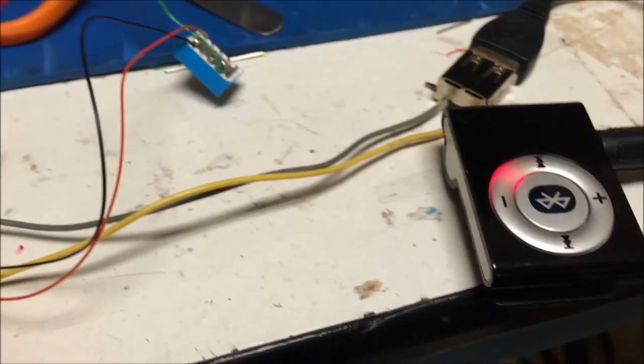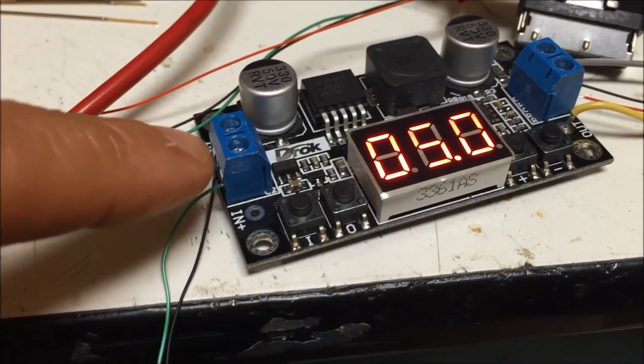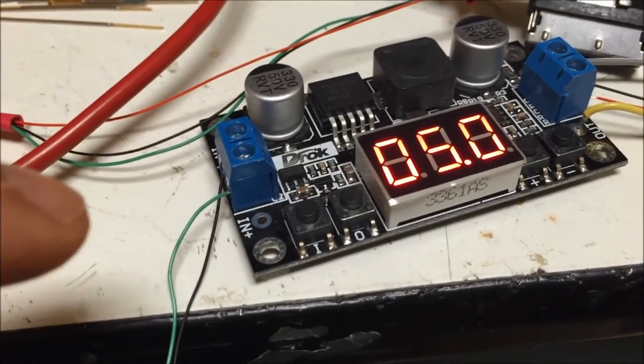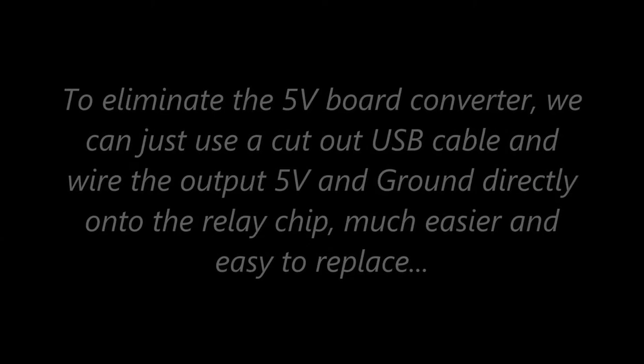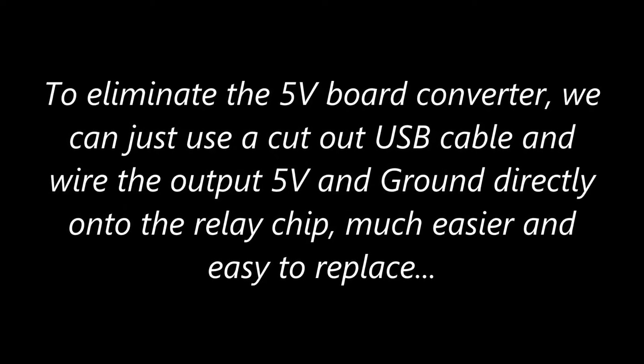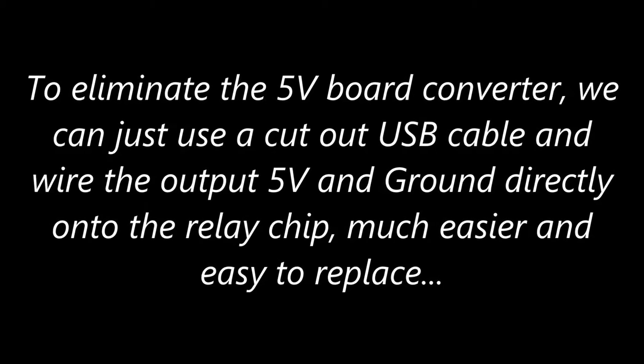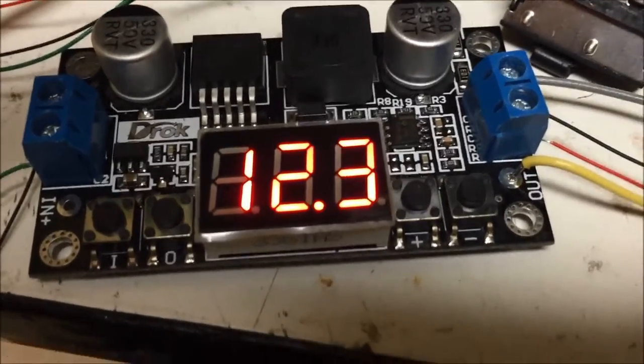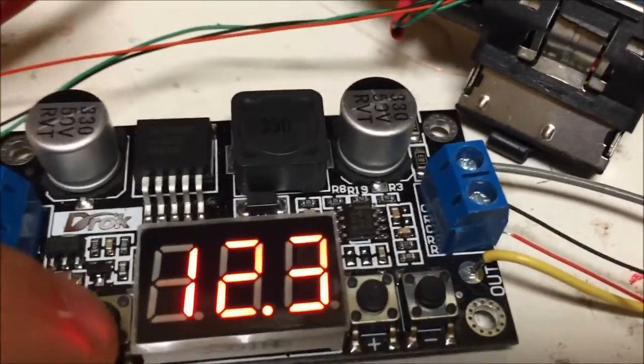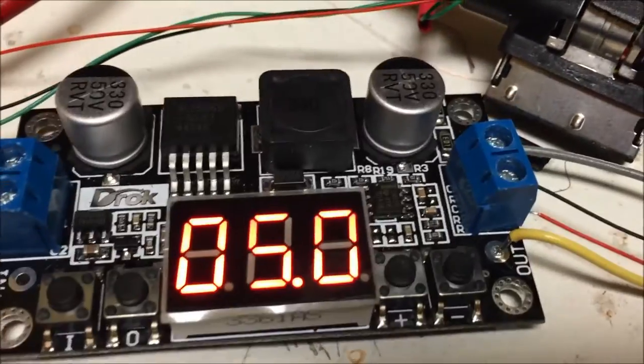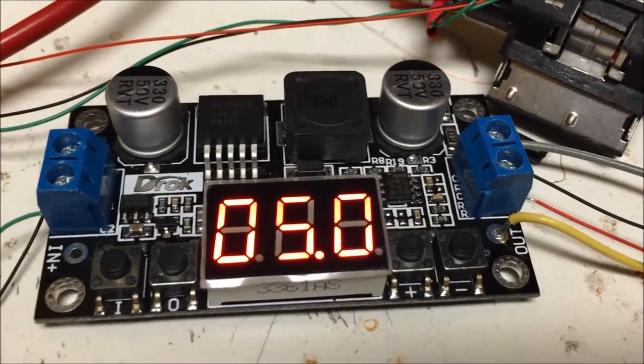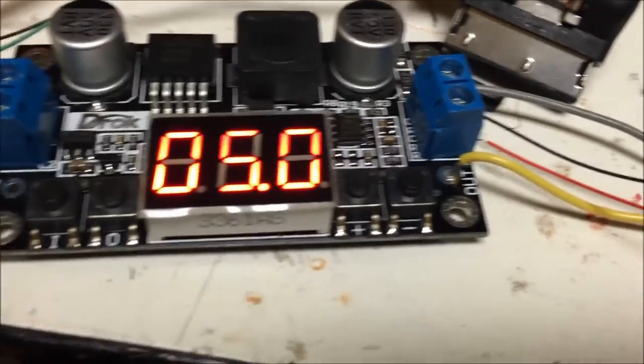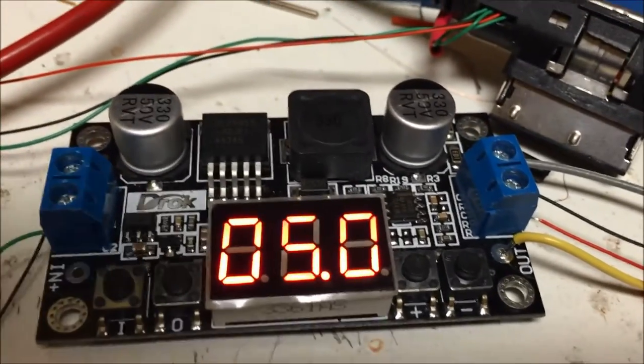Everything is working. I'm going to put it in a little box. Input will be 12 volts from cigarette lighter. So this power board input is 12 volts, output is 5. And this board is about 7 bucks.